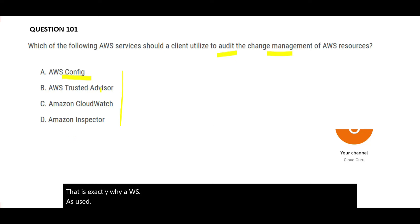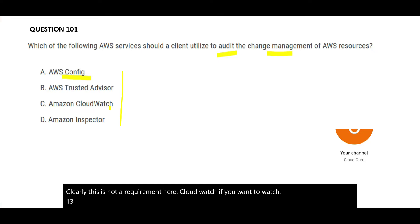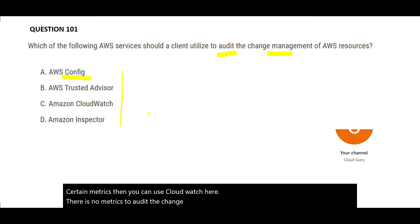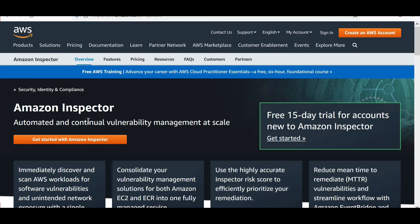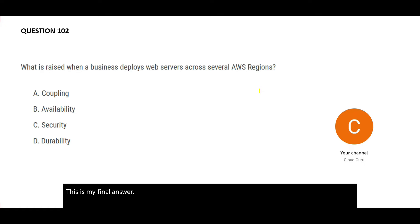Trusted Advisor gives you advice on security best practices — that is not a requirement here. CloudWatch is used to watch certain metrics, but there are no metrics to audit change management. Inspector is used for automation of vulnerability management. So this is the final answer: AWS Config.